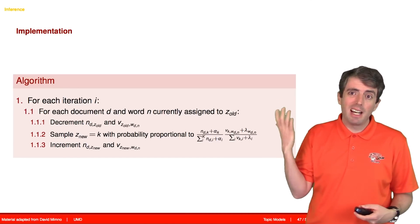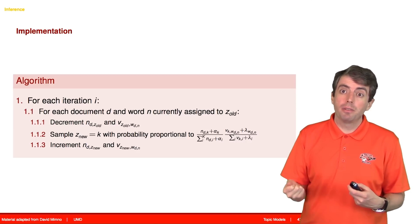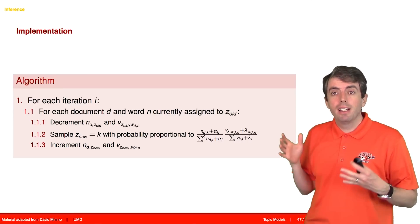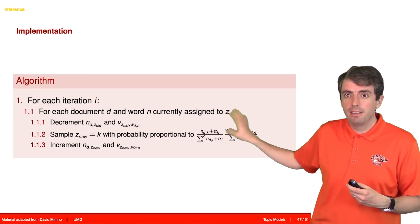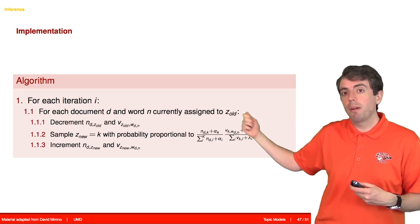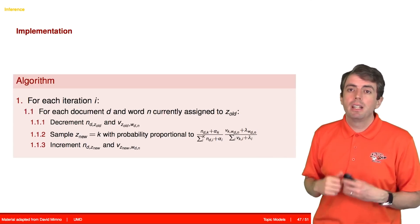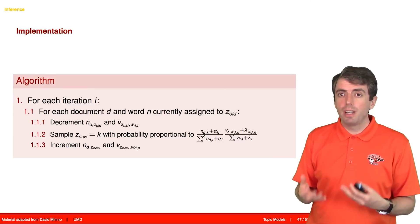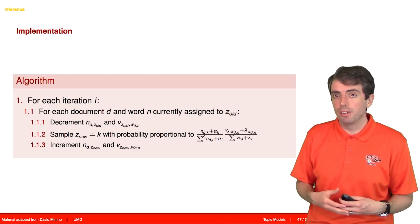For example, how do you set the hyperparameters? Mallet takes care of that in reasonable ways for you. But underneath all of that is this very simple algorithm that iteratively selects new topic assignments for each of your words. And from this very simple algorithm, you can run topic models over document collections with millions or tens of millions of documents without too much difficulty.